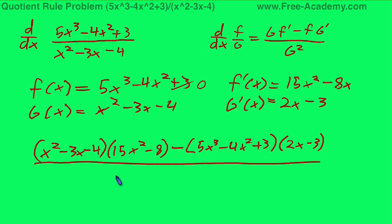This is over g squared: x squared minus 3x minus 4 squared.